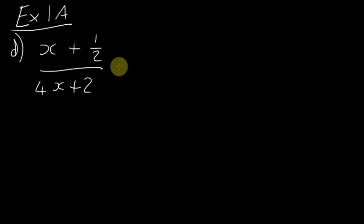We've got half here to deal with, which we haven't seen so far. Let's attack this logically. There's nothing we can do to the top at the moment, but on the bottom we can see 2 is a common factor, so let's factorize the bottom.